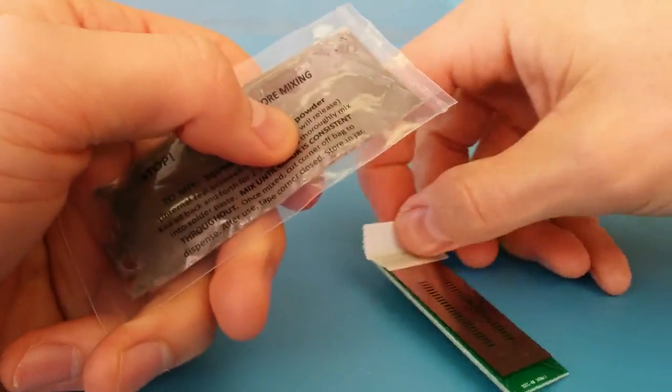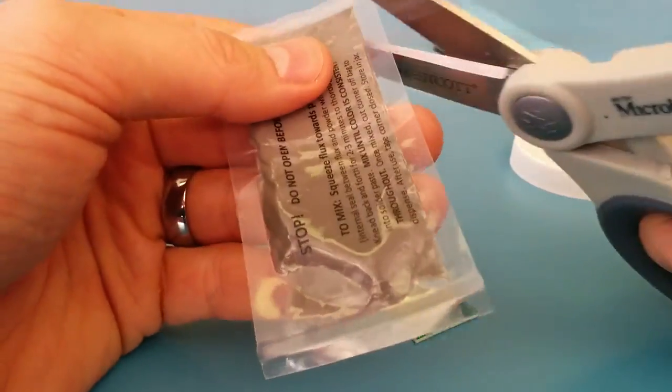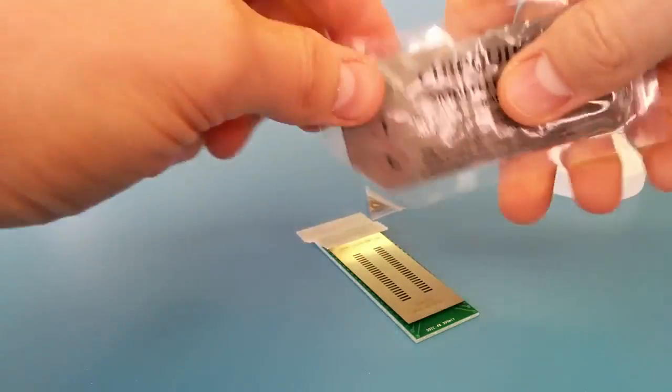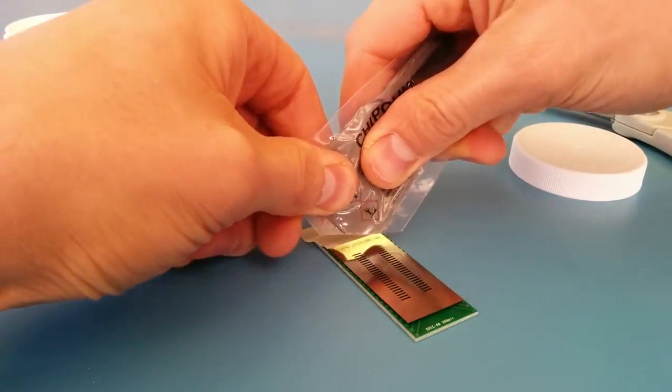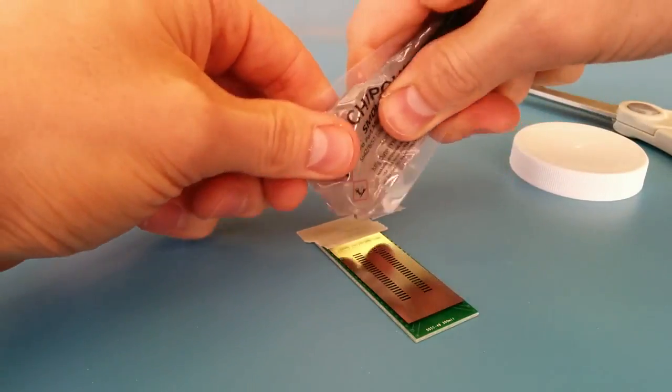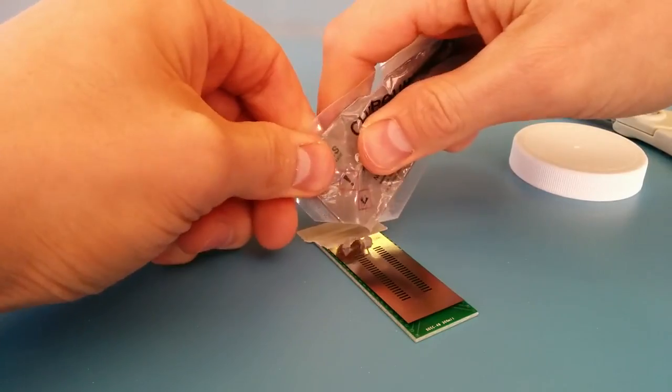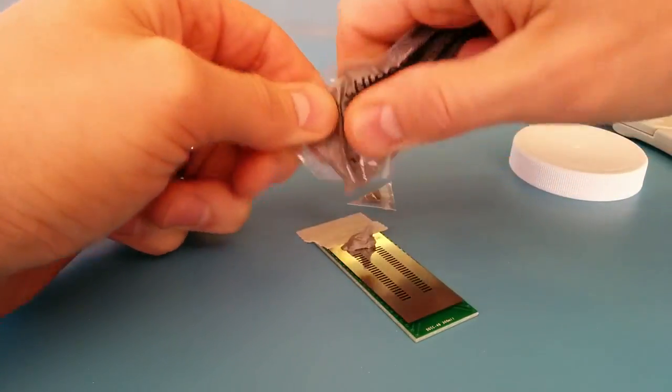Once it's mixed, get out the board you want to stencil paste onto. Cut the corner off the bag, and then dispense by squeezing the bag. There we go.